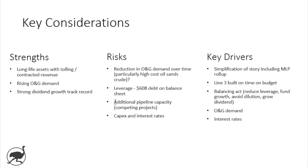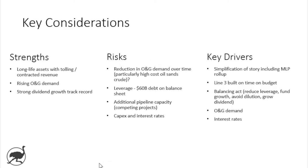Another risk is additional pipeline capacity competition. It's very difficult in the current environment to get pipelines approved and built, but Enbridge is not the only game in town. Trans Mountain is trying to build a pipeline, and there's Keystone XL as well. Depending on who gets their pipelines approved and built, that will have an impact on how each of these individual stocks perform. The most favorable outcome for Enbridge would be if they get their pipeline approved while competitors' do not. If all three get built, it's net-even, assuming enough crude demand.